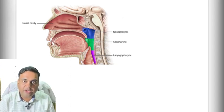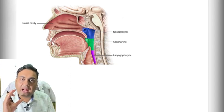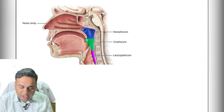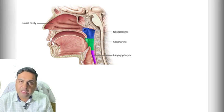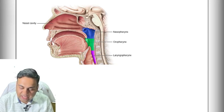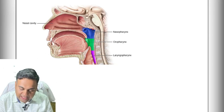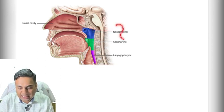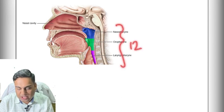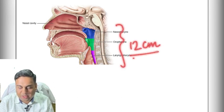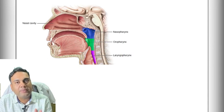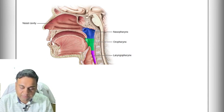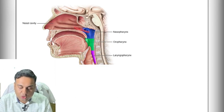First, we are going to understand where the pharynx is in our body. We know it is behind our throat and behind our nose, but if we look at the cross-section of our body, we realize that pharynx is extending from the base of skull to the cricoid cartilage. The total length is nearly 12 centimeters in an adult.